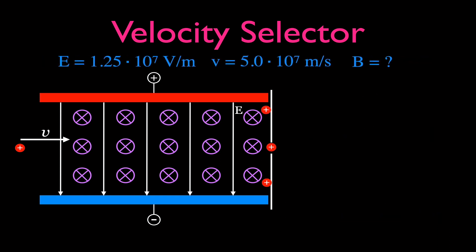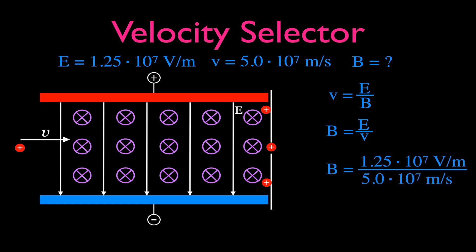Let's do one more problem. In this case, we don't know the magnetic field strength. The electric field strength is 1.25 × 10⁷ volts per meter, and the velocity of particles traveling straight through is 5.0 × 10⁷ meters per second. Solving for B: B = E/V = (1.25 × 10⁷) / (5.0 × 10⁷) = 0.25 tesla.